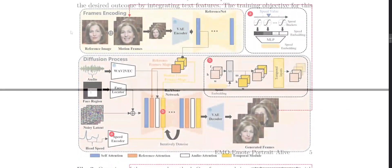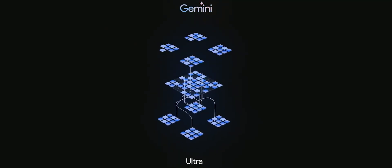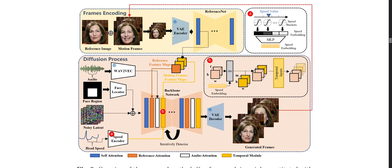The technique reminds me of the multi-modal fusion approach that Gemini uses. It starts with a VAE encoder that converts the reference image and already-generated motion frames into a latent space. Then an encoding process takes the audio, converts it into vector space, and takes other information including the facial region, a noisy latent version of already-generated images, and the current head speed. All this is fed into the backbone network that iteratively denoises the frames, and finally a VAE decoder converts them back into actual frames, keeping the character's appearance consistent throughout generation.